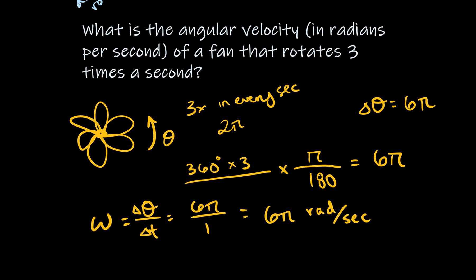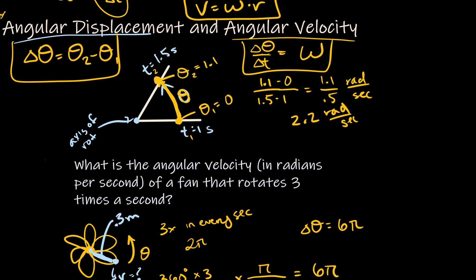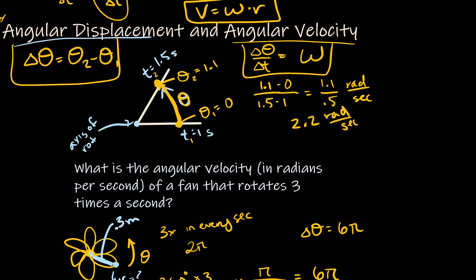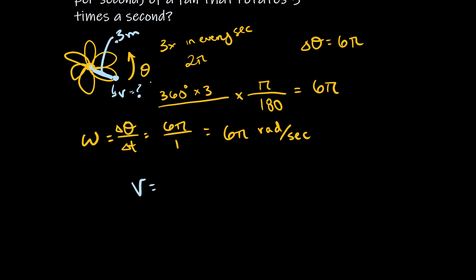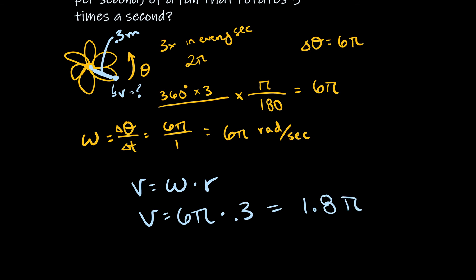Now, what is the tangential velocity of a point 0.3 meters from the axis of rotation on that fan blade? Using v = ωr: v = 6π × 0.3 = 1.8π meters per second.